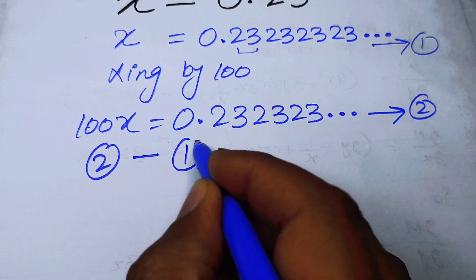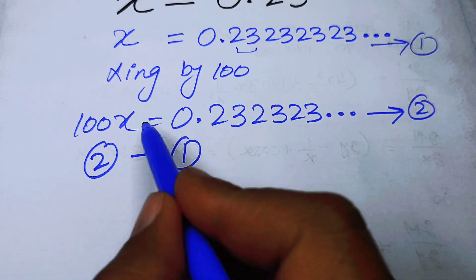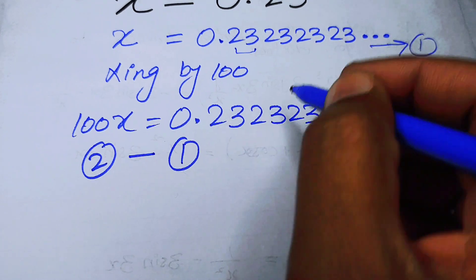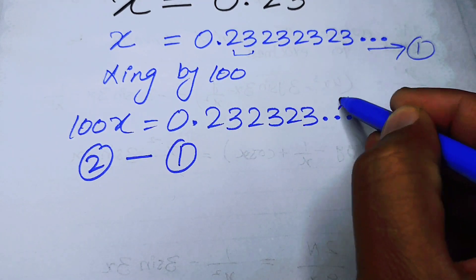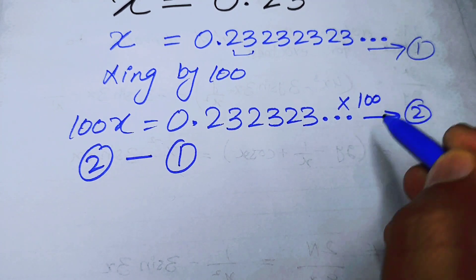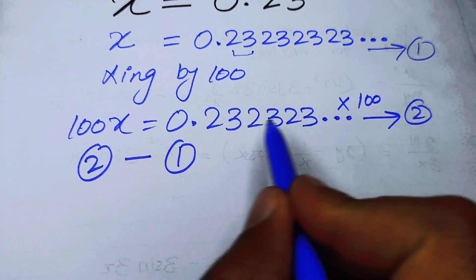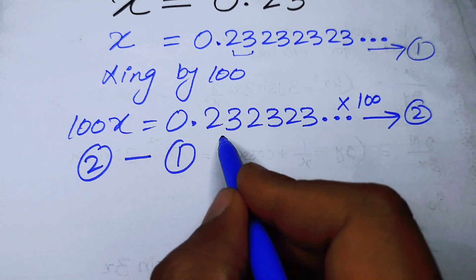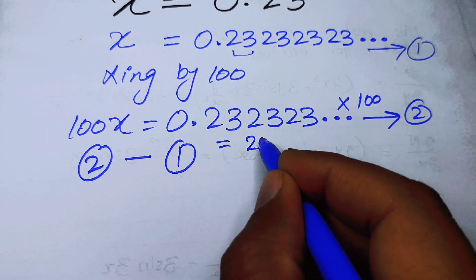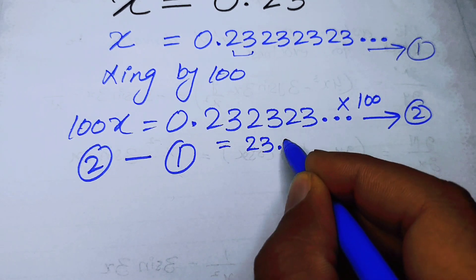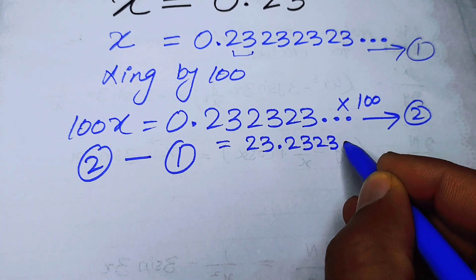We multiply both sides by 100, so the expression becomes 23.2323... and so on. This is equation 2.